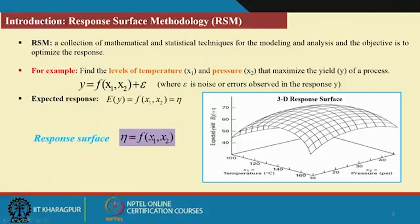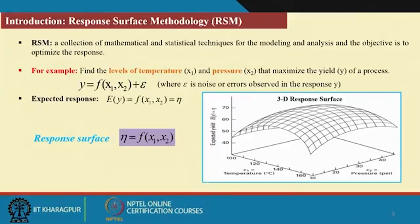By saying η = f(x1, x2), this may be a function of main effects, interaction effects, and higher order quadratic effects. You want to first find out whether a first order model, second order model, or higher order polynomial is required. Once you have that response surface, you also want to find out where the optimum response lies. That is the purpose of response surface methodology.